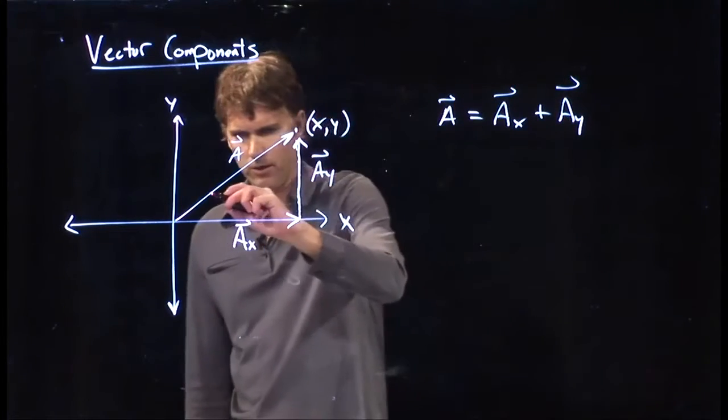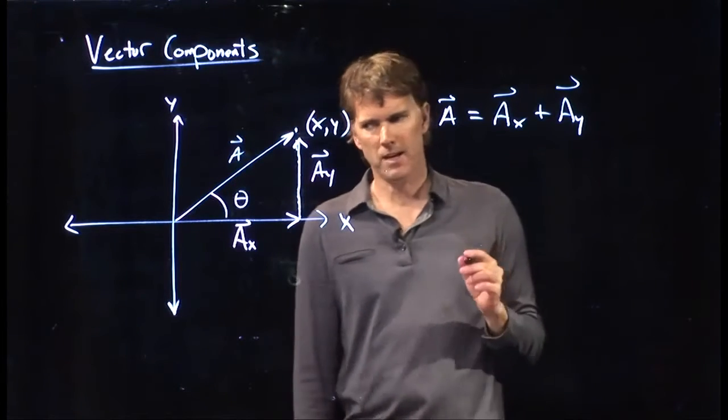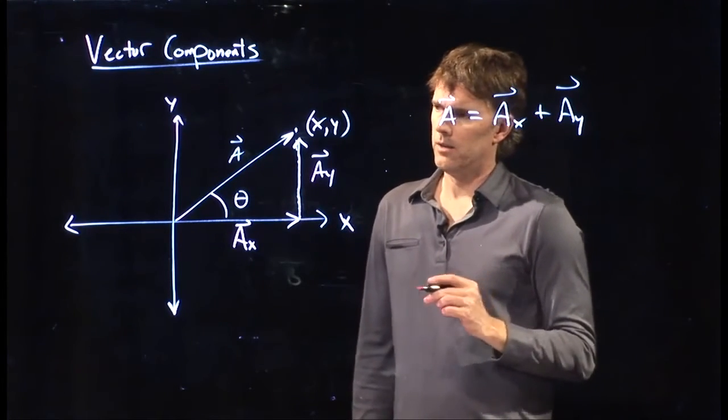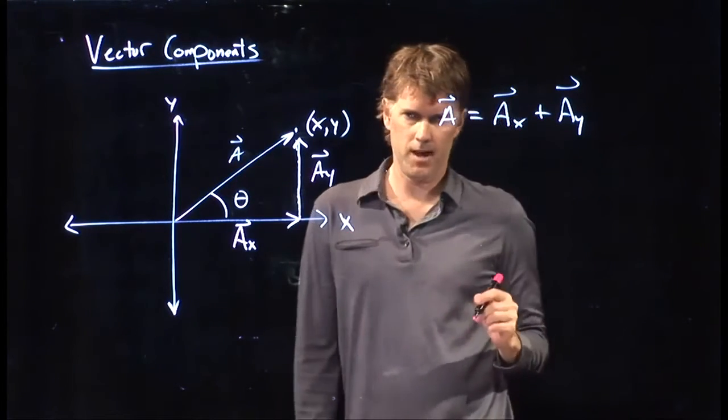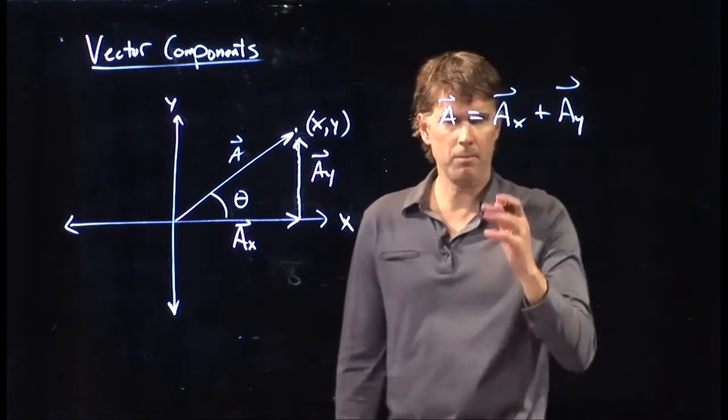But we also know a little bit about polar coordinates now. So if that is angle theta, and the hypotenuse is the magnitude of vector A, which is just A without the arrow, what can we say about these components?